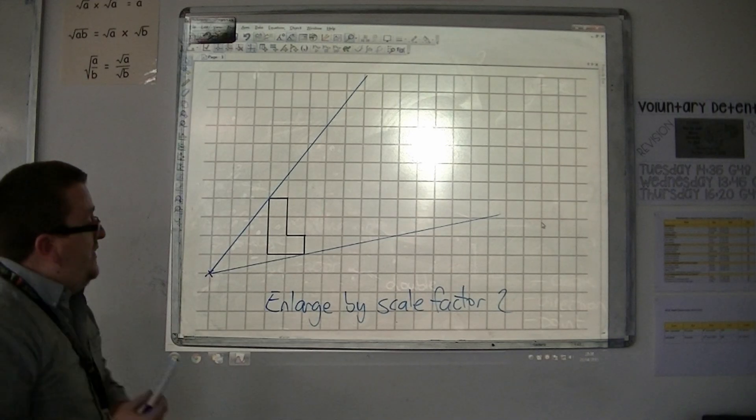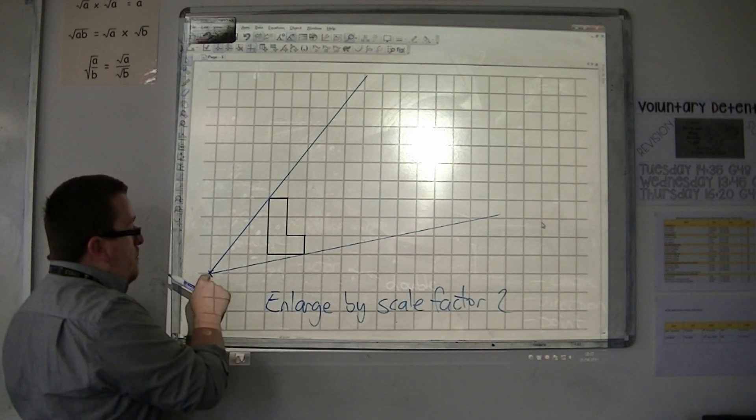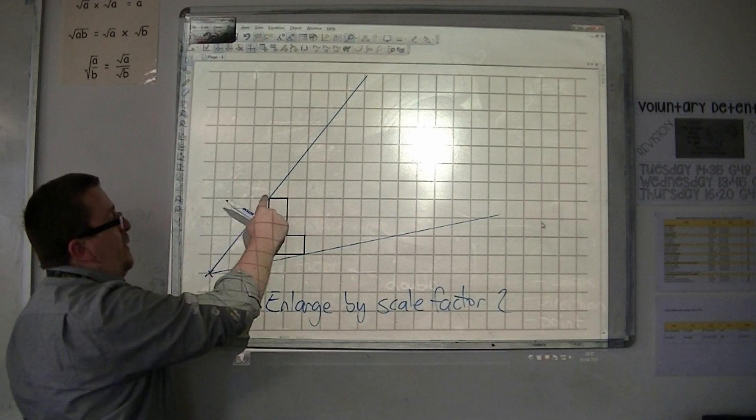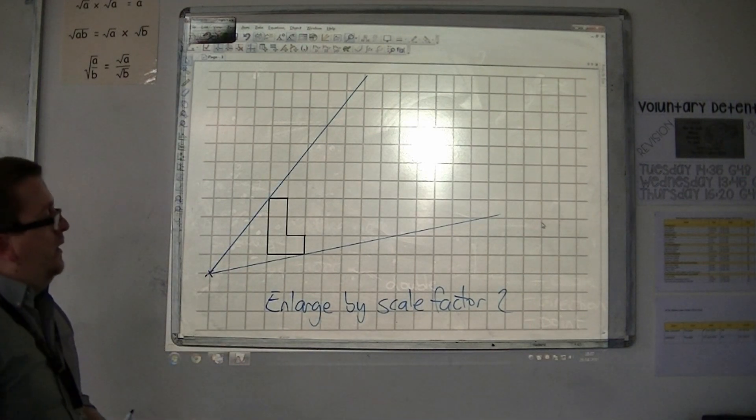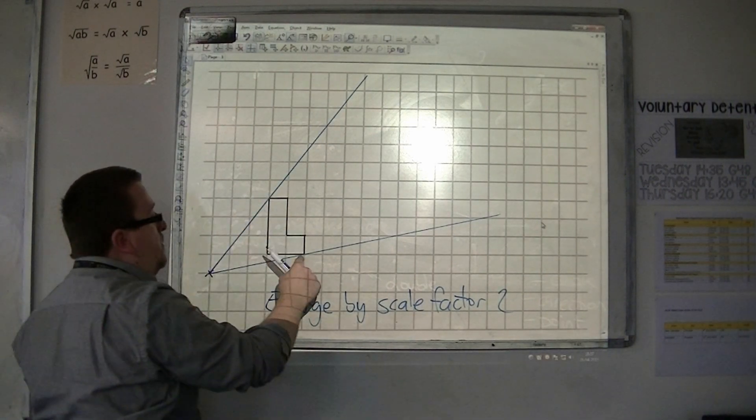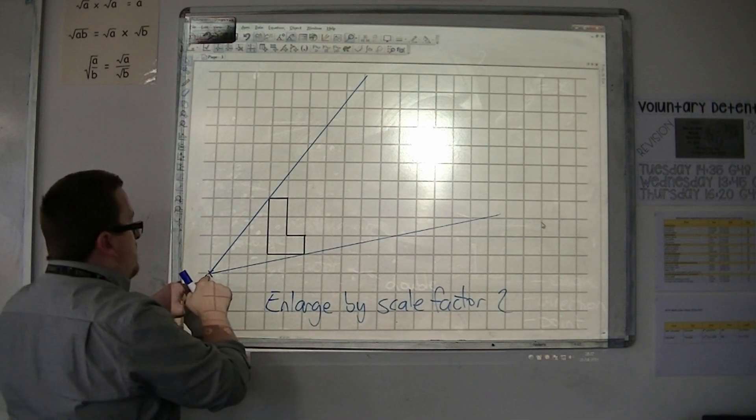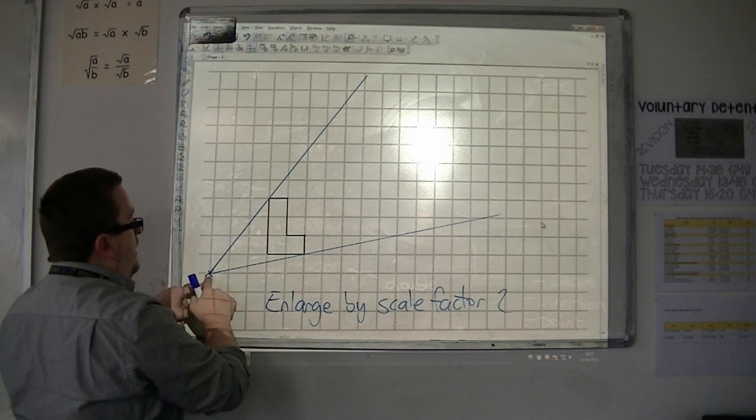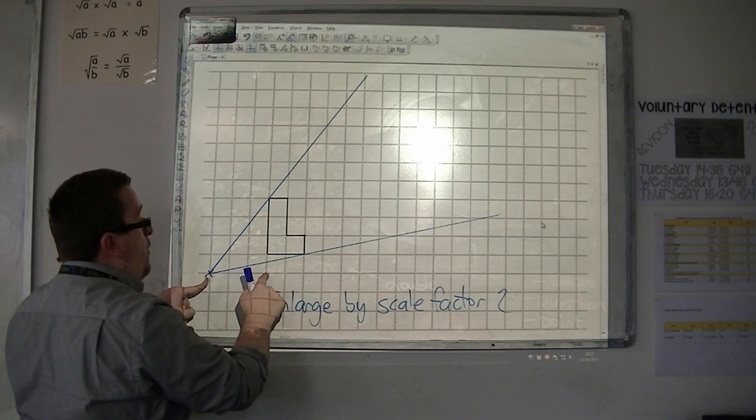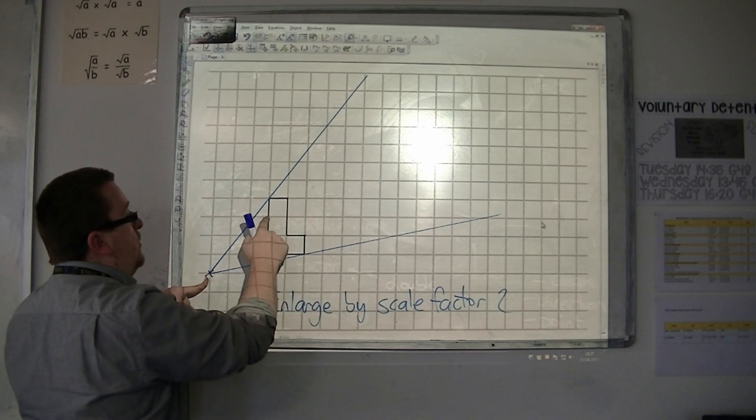So now, what we do is we go from the centre of enlargement to each of the corners. So I'm going to go with these two points and show you where they should now appear. So to get from this point to this point, I go three along and four up.